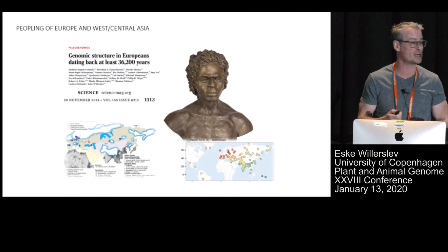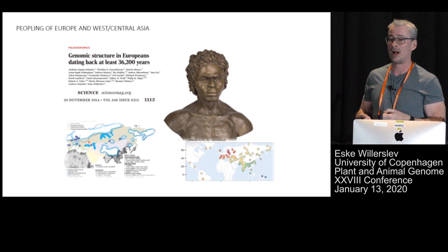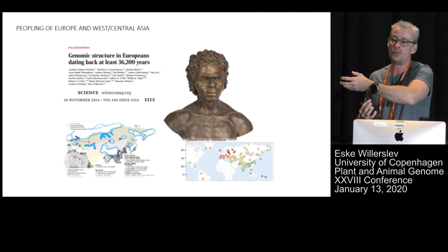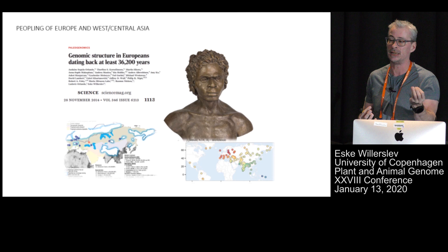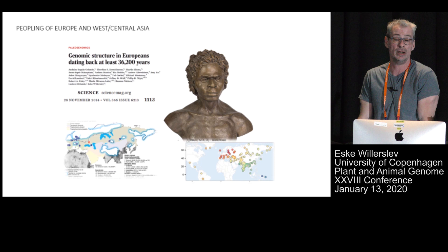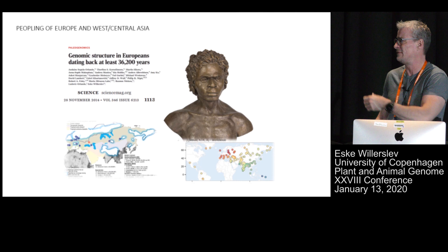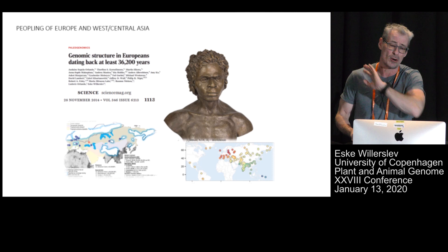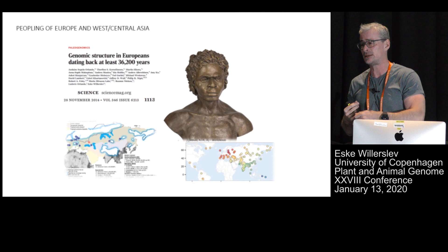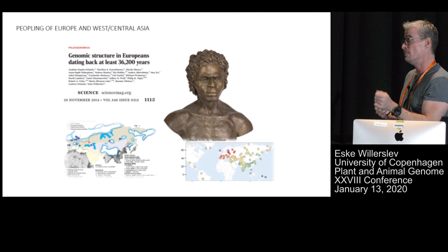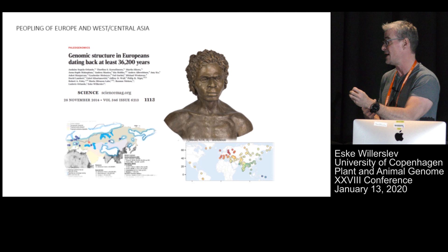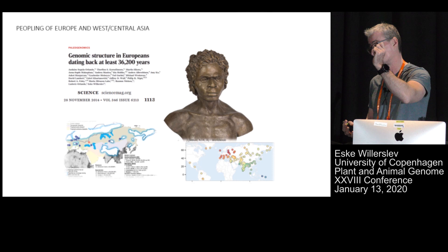What about Europe? Until we could do genomics, we had very little knowledge of who these early modern humans in Europe were or who they were related to. We sequenced the first ancient early Stone Age human genome from Europe — called Kostenki 14 — dated between 36,000 and 38,000 years old. Based on skull morphology, people had claimed it could be related to originally Australians — we don't see that at all genetically. This individual doesn't seem to be a direct ancestor to any people we've sequenced today, but is more closely related to contemporary people from Europe and Western Asia than anyone else, suggesting quite a long-term continuity within Europe.